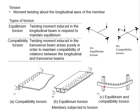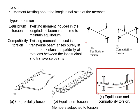This is an example of both equilibrium and compatibility torsions combined, which normally happens at the corners of buildings where the beam is continuous in a curved form.